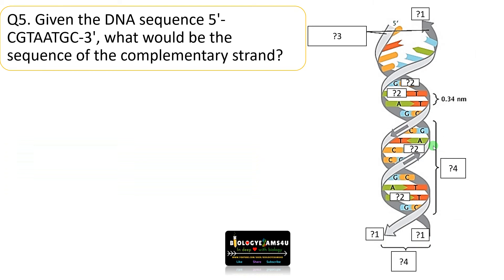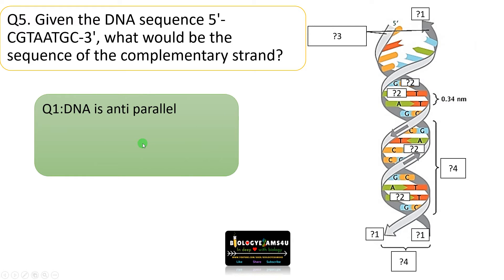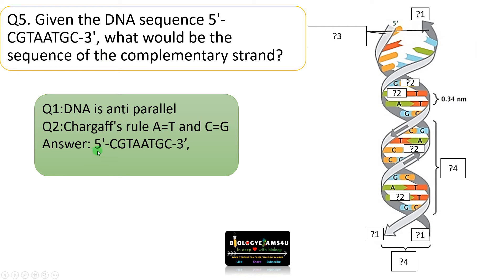The next question is regarding complementarity. Given the DNA sequence 5 prime C, G, T, A, A, T, G, C — what would be the sequence of the complementary strand? Apply Chargaff's rule: if it is C it will be G, G becomes C, T becomes A, A becomes T, and so on. Remember this end is 5 prime, therefore the complementary strand is anti-parallel, so this end will be 3 prime, as both strands run in opposite directions.